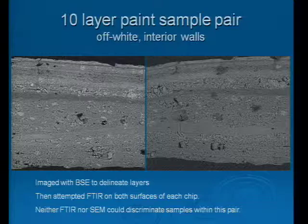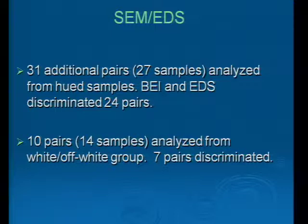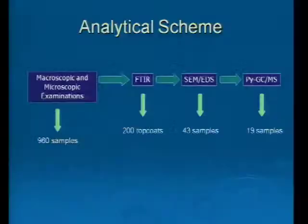In addition to that pair, 31 pairs went forward to SEM, constituting 27 samples — that's from the hued group only, the 80% of the population. Backscatter and EDS together discriminated 24 pairs from those 31. From the white and off-white group, 10 pairs went forward, constituting 14 samples, and from that, seven pairs were discriminated. So 43 samples went forward to SEM, and now 19 samples need to go forward to pyrolysis to perform further differentiation.